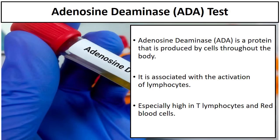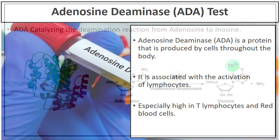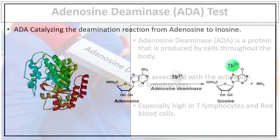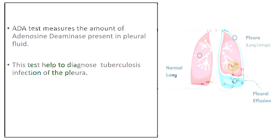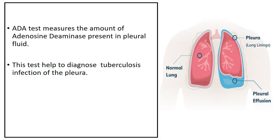Adenosine deaminase, or ADA, is a protein produced by cells throughout the body. It is associated with the activation of lymphocytes, a type of white blood cell that plays a role in the immune response to infections. ADA catalyzes the deamination reaction from adenosine to inosine in the human body.